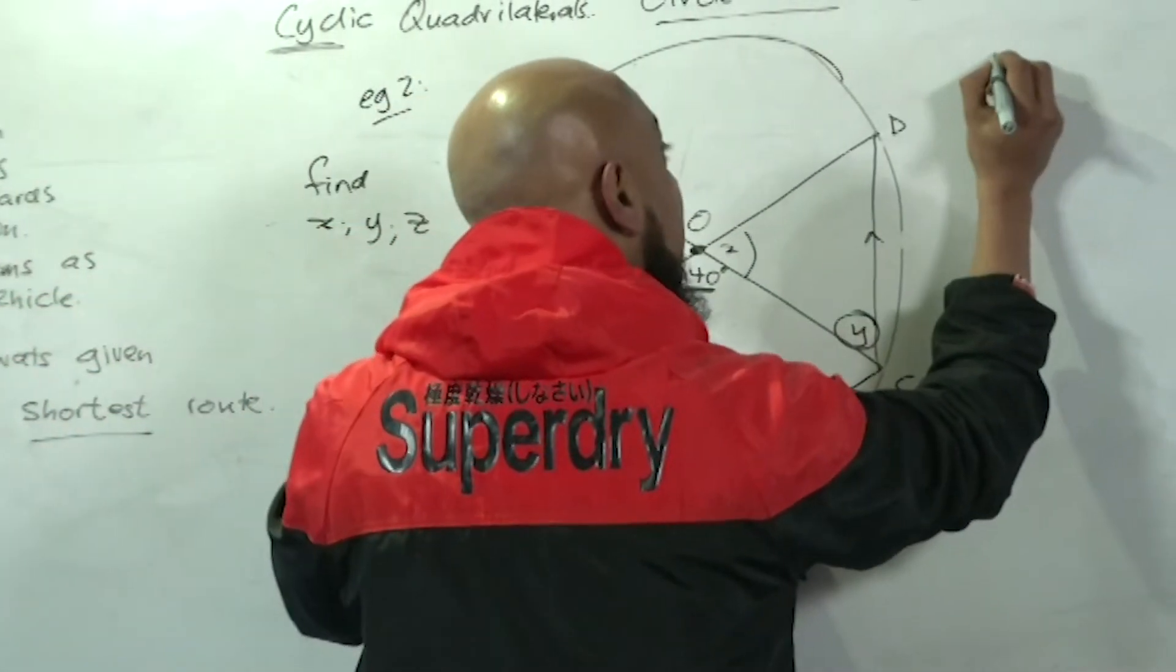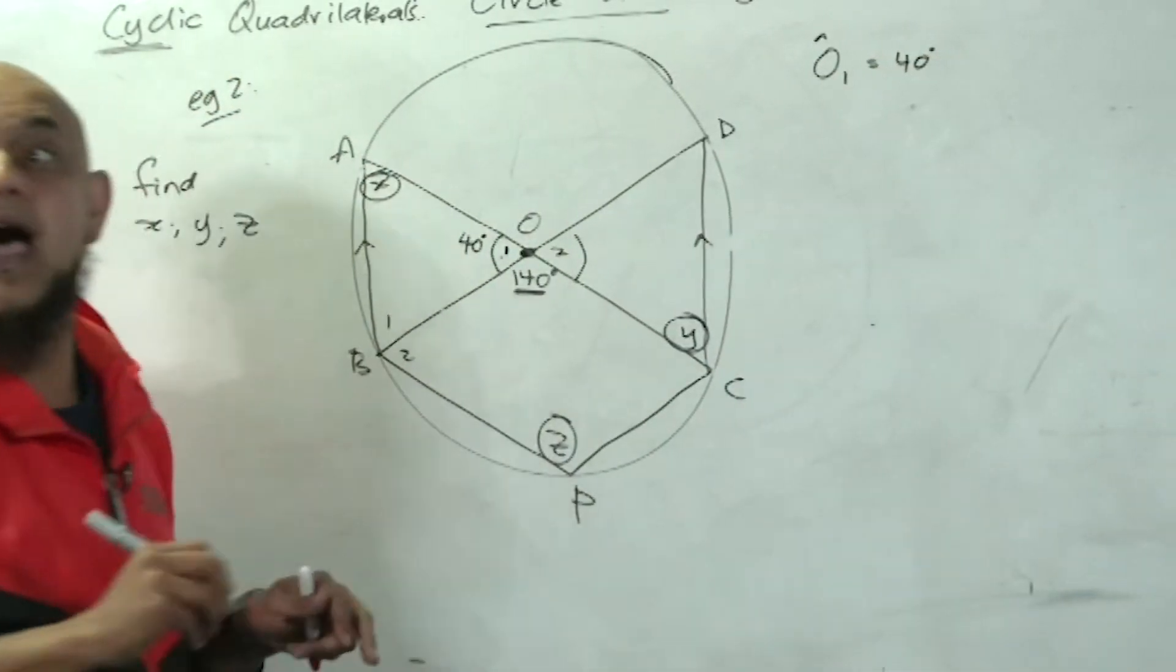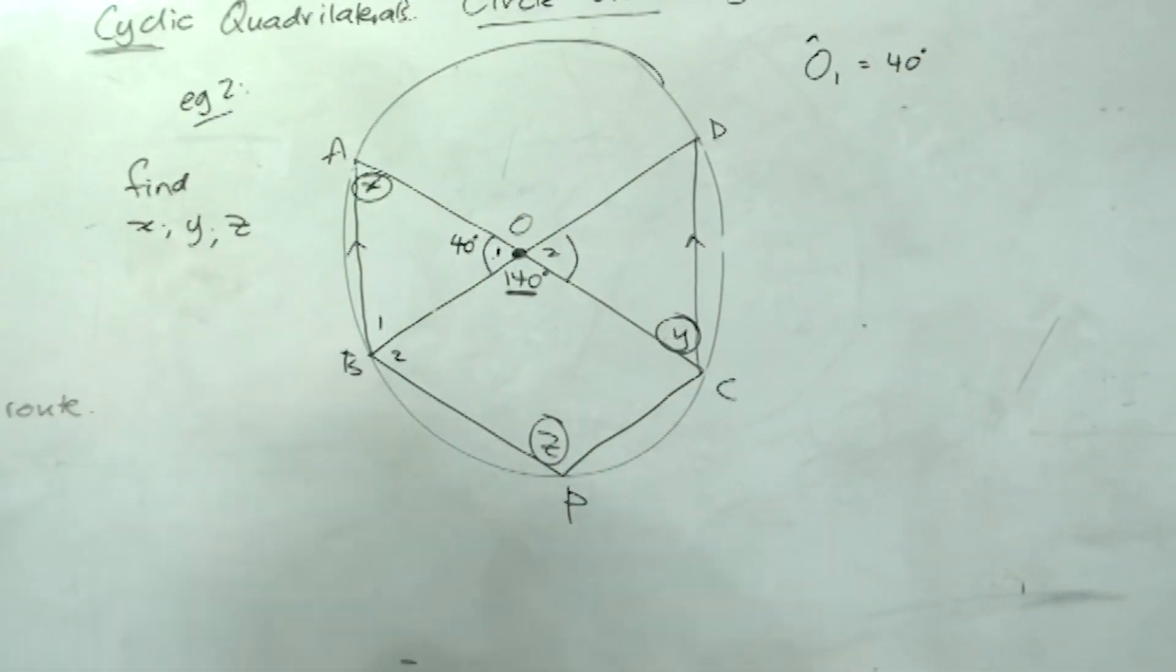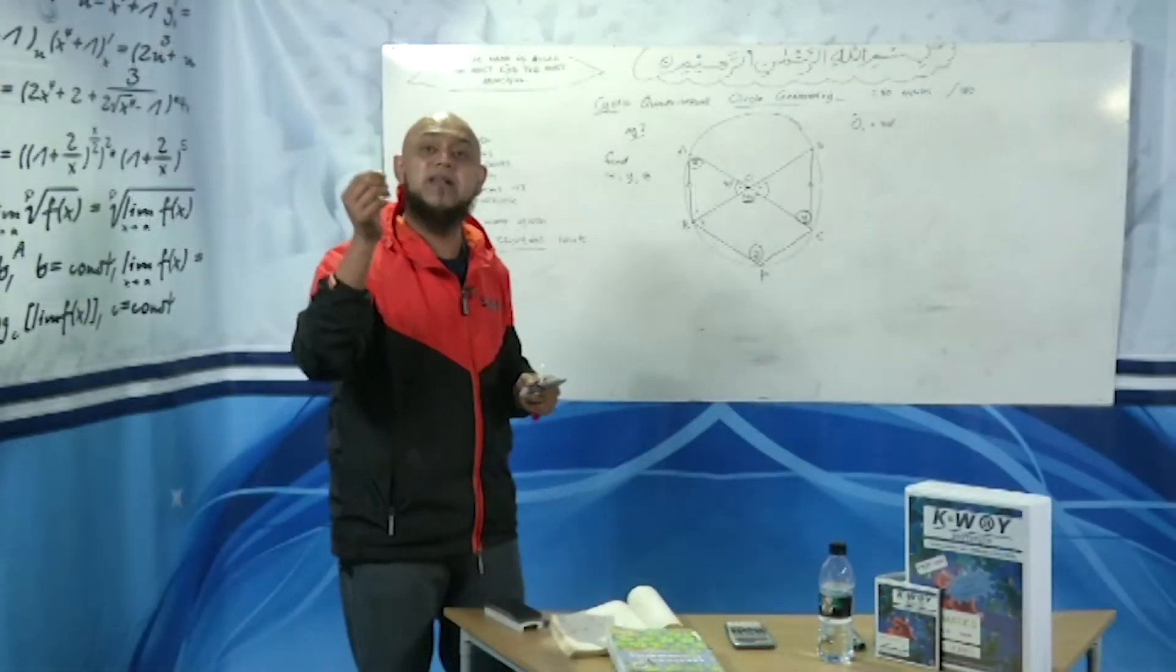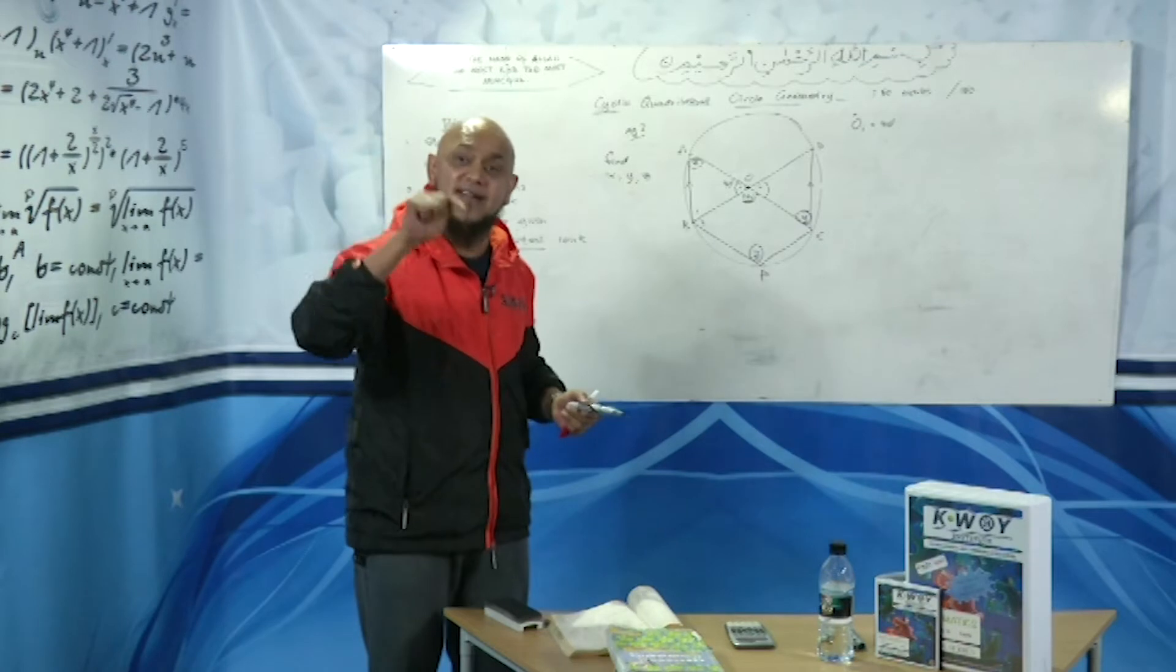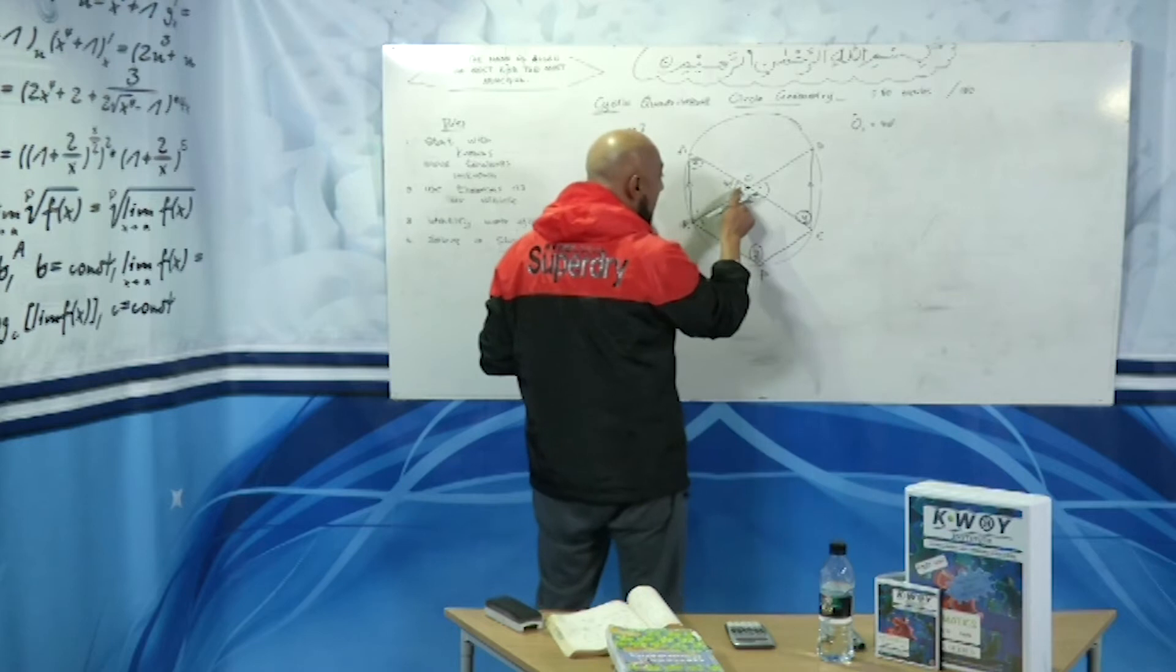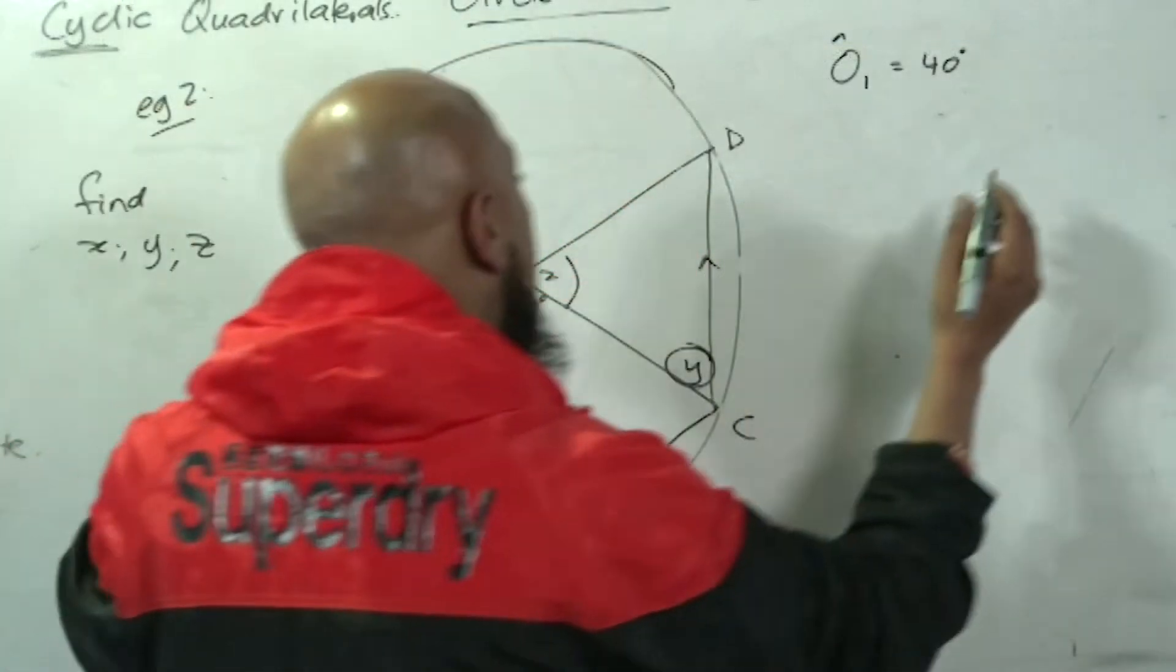As you're going along, you can write them as reasons. I'm going to say angle O1 is equal to 40 degrees. Whether I use it or not is immaterial, but the more information I have on my diagram, the easier it's going to be for me to get my unknown values. So O1 equals 40 degrees.